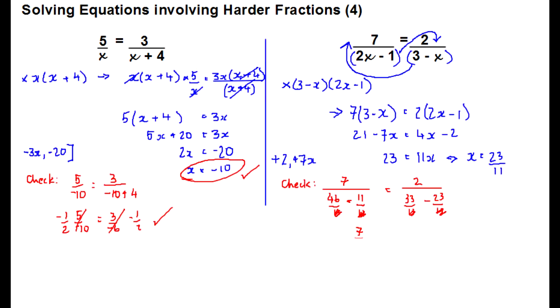And we're left with 7 over 35 is equal to 2 over 10, which both cancel down to a fifth. So the left-hand side equals right-hand side. So x is 23 over 11 is the right answer. I hope you enjoyed that. Thanks for watching. Have a look at my other videos and tutorials.